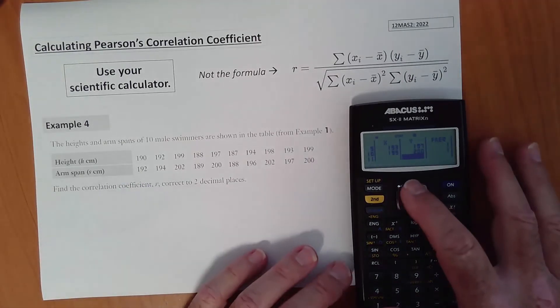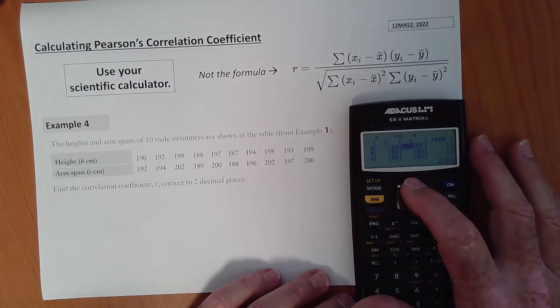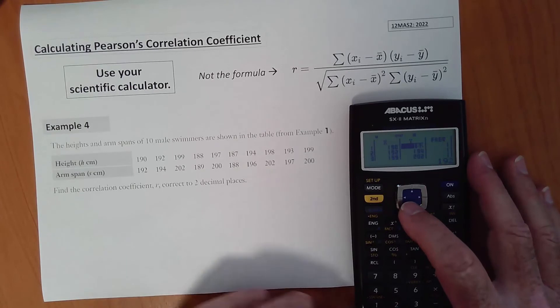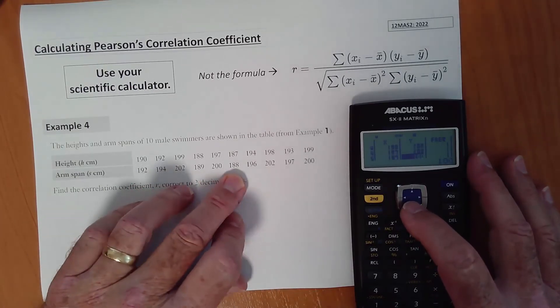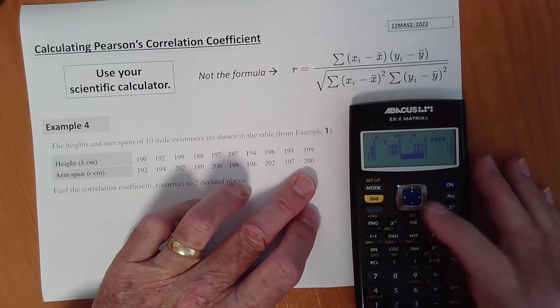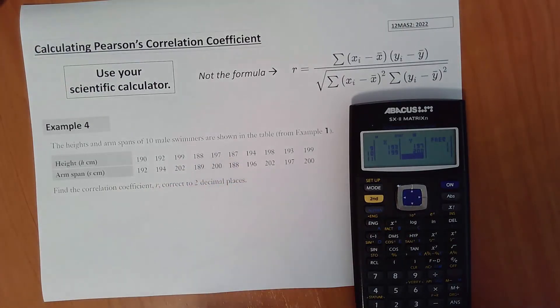Then what you can do, you can scroll up, double check all of your data entry is okay. And I'll just quickly do that. Okay, that looks okay. So the next step, we need to go out of our data entry screen by pressing the AC key.